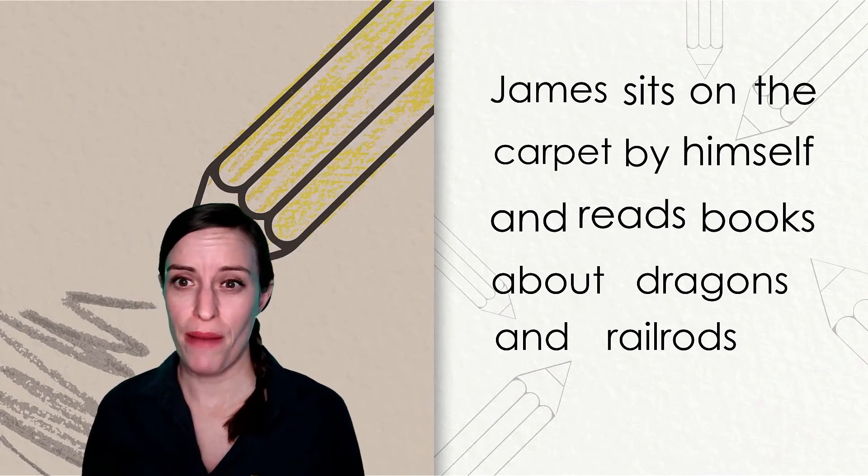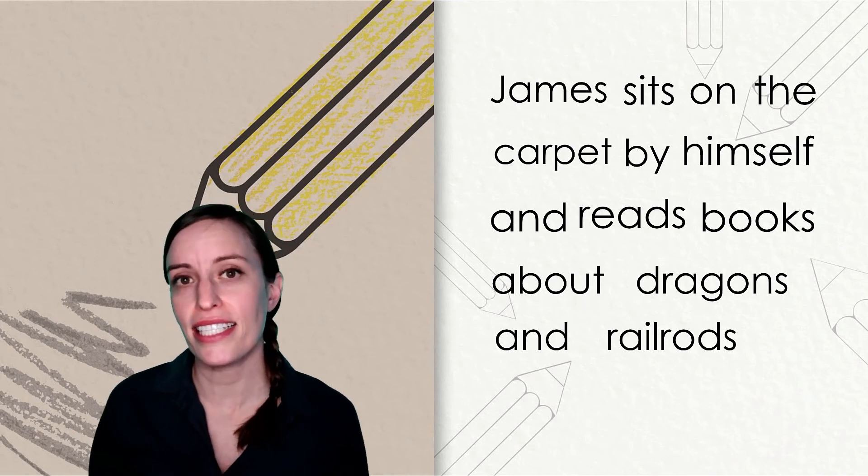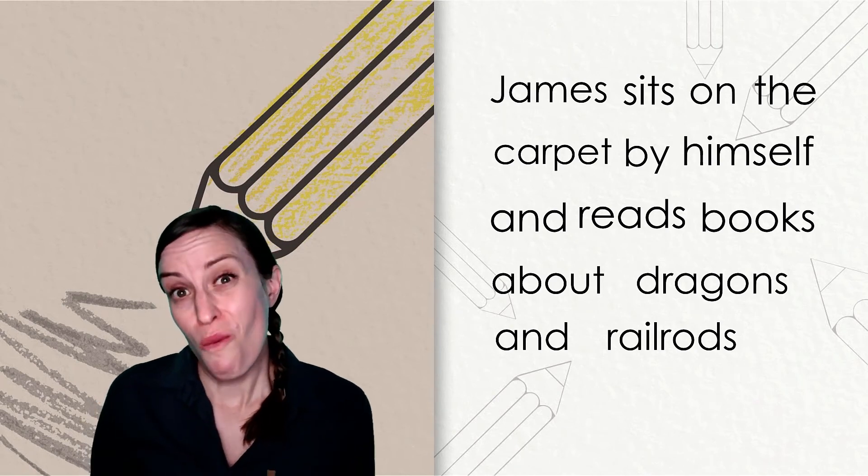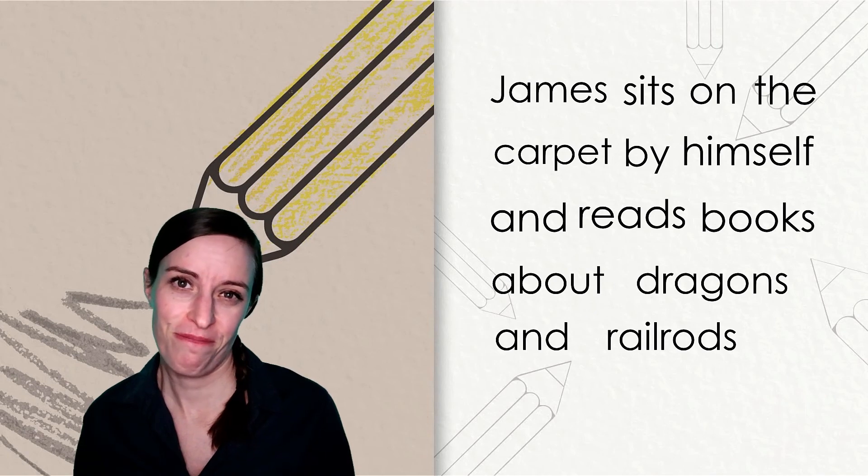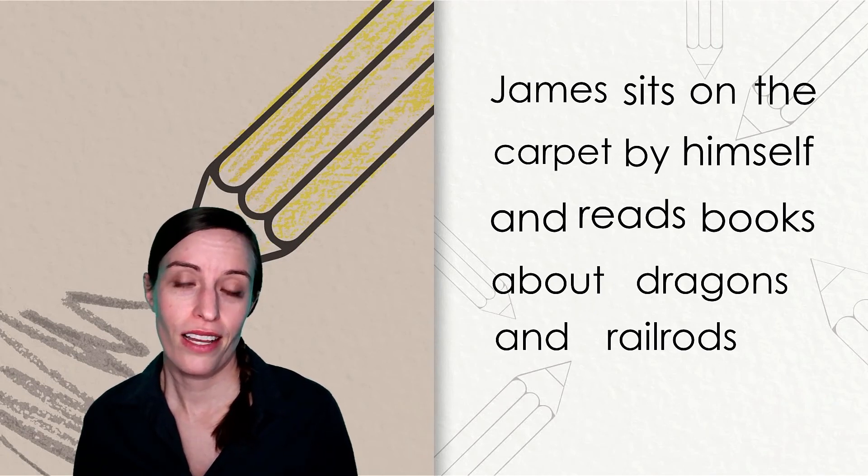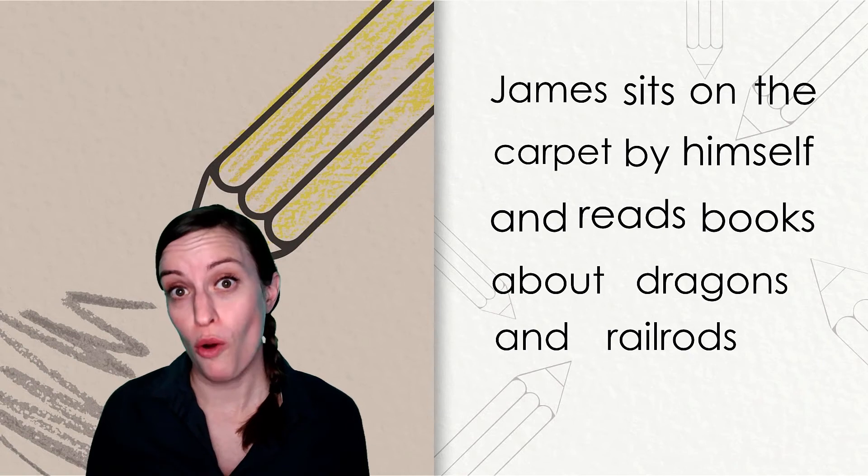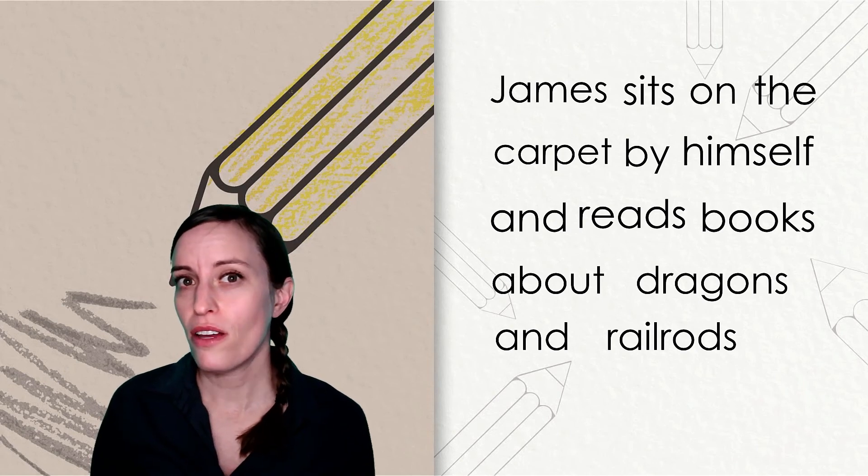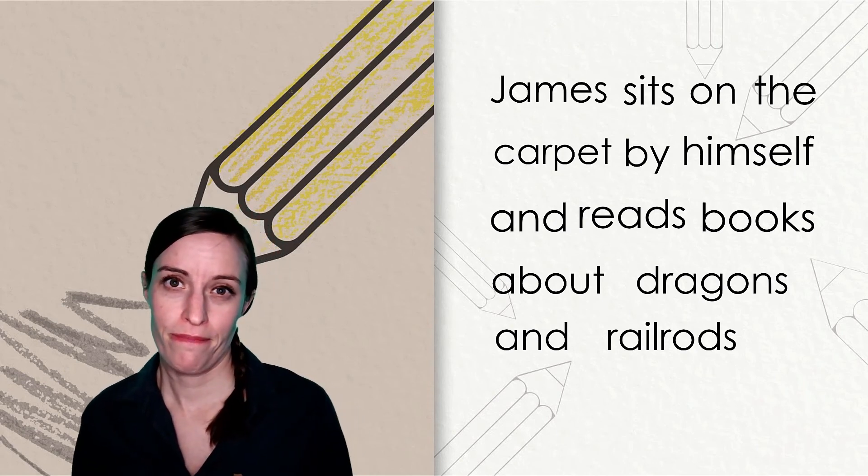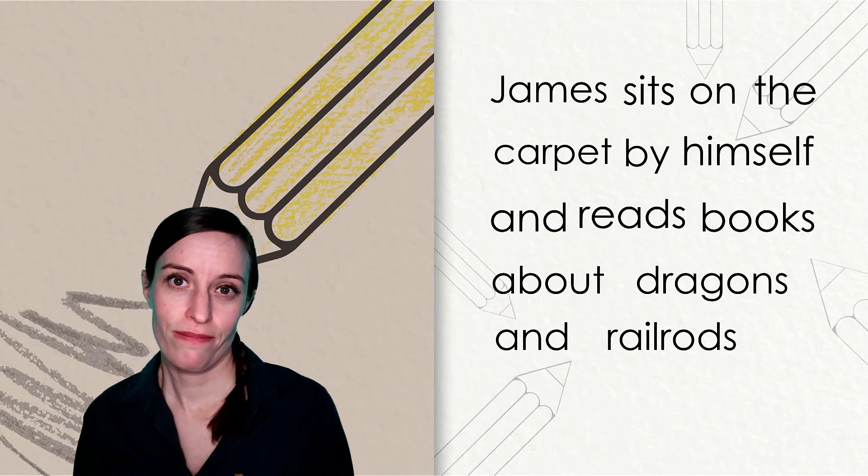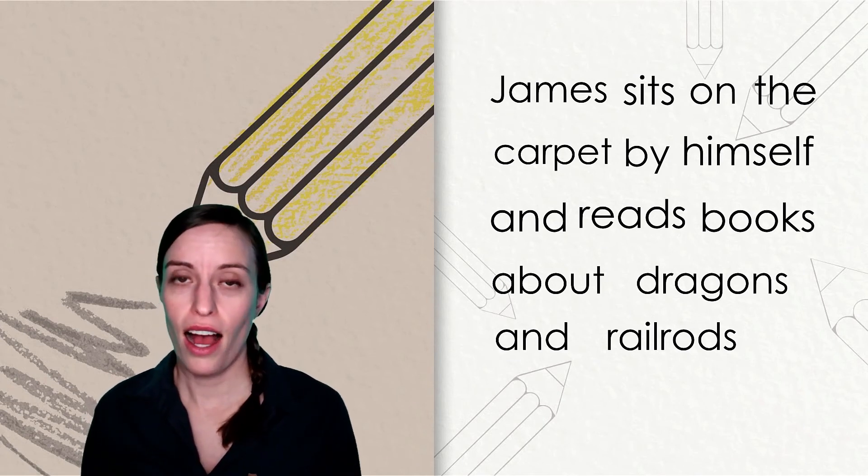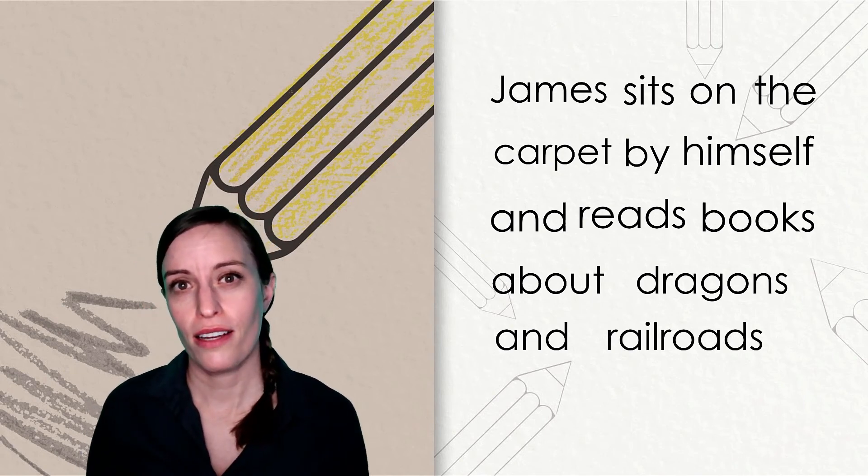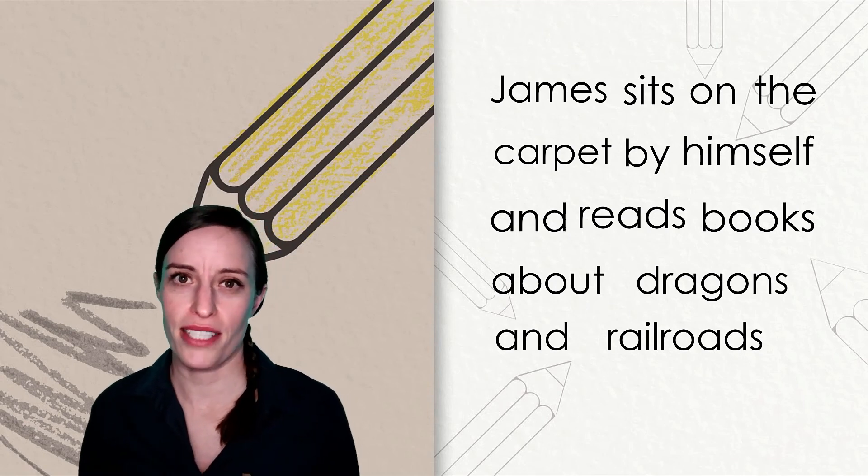James sits on the carpet by himself and reads books about dragons and railrods. I don't know what a railrod is. What do you think the author meant to write here? If you said railroads, I agree. We need a vowel team in that second syllable that says O. What could it be? The O-A? I agree. Now that word says railroads. Both of those syllables are vowel team syllables.